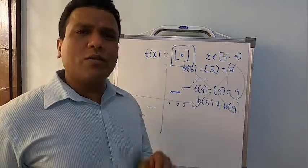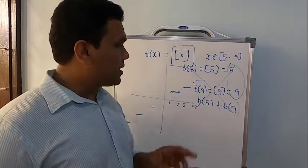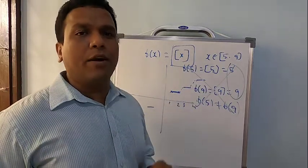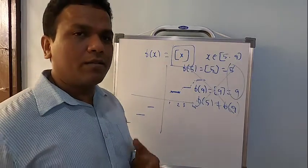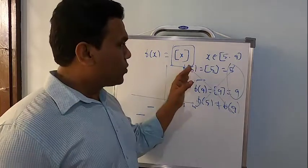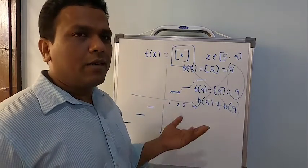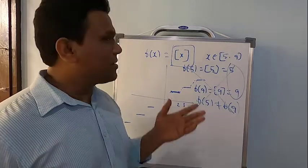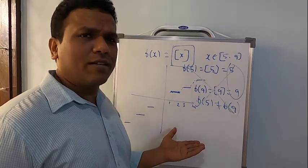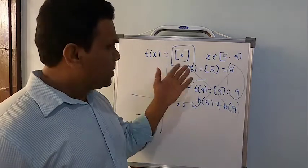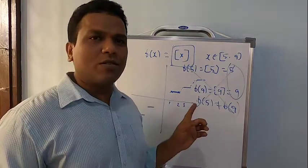So for this one, you just have to give a statement: the greatest integer of x is not continuous at any integral points, therefore it is not continuous. Once it is not continuous, it is not differentiable. Also f(5) is not equal to f(9). Since it's not differentiable, you cannot find f dash of c — not possible.